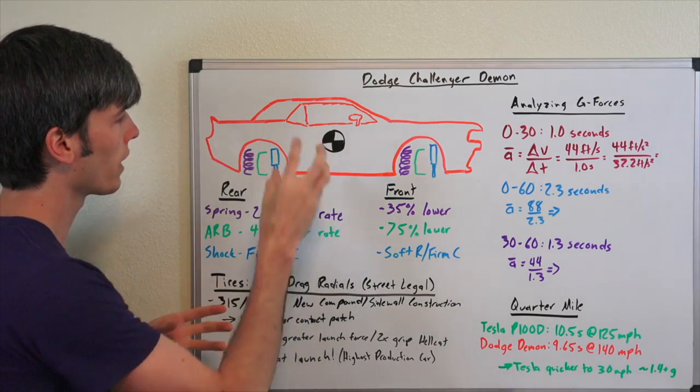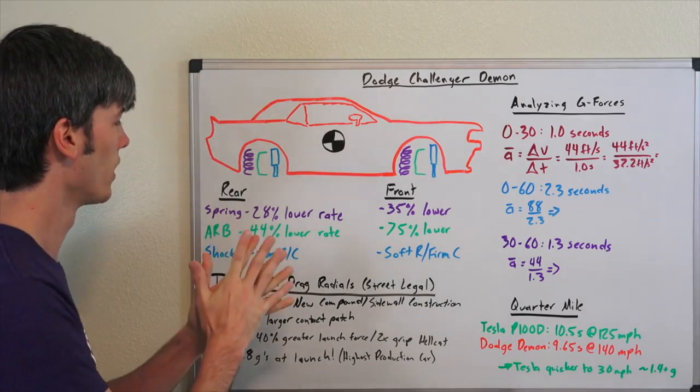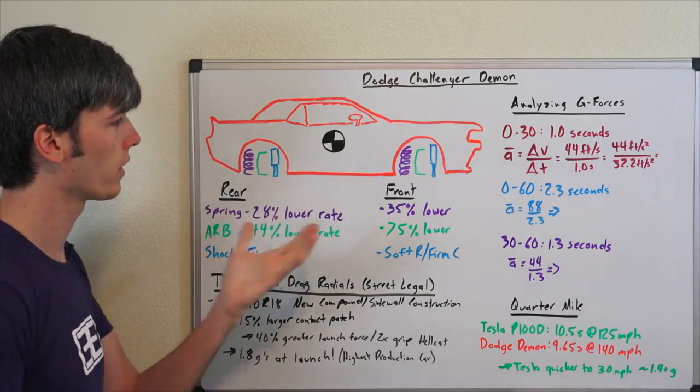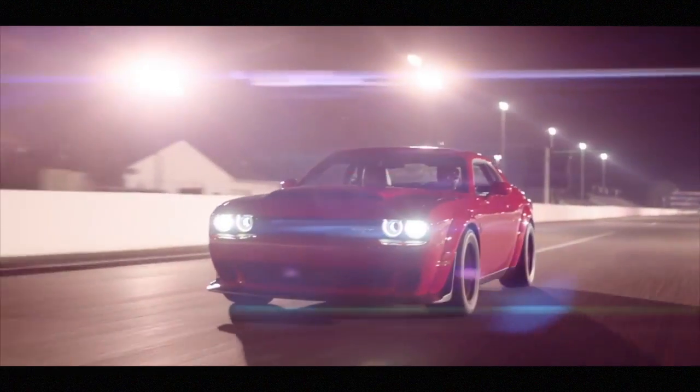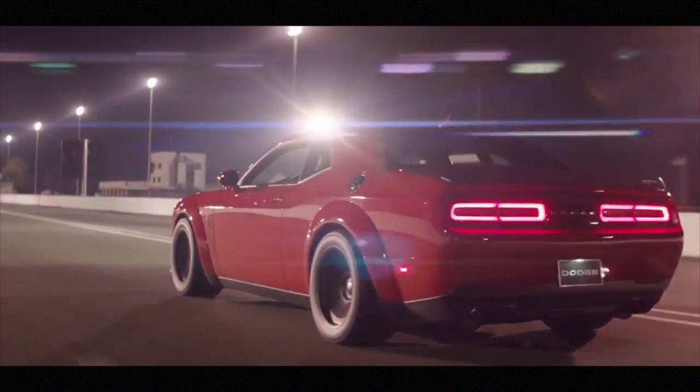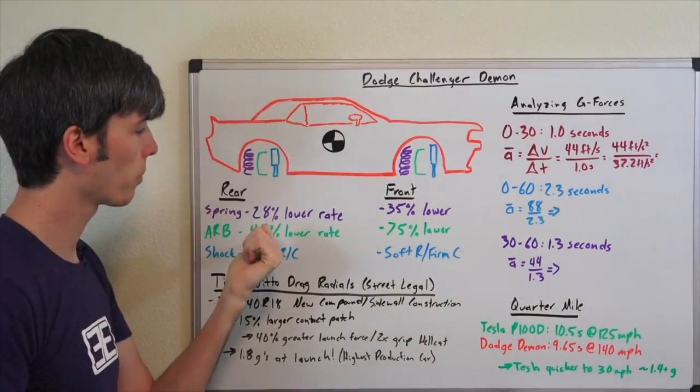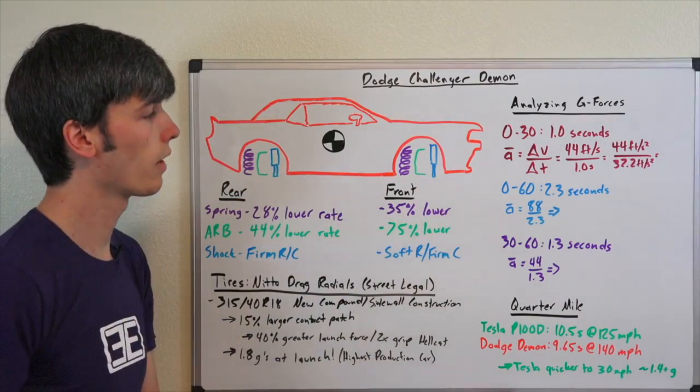How do they get the weight to all rest on that rear tire? Versus the Hellcat, they've lowered the spring rates in the rear by 28%, lower the spring rates in the front by 35%, the anti-roll bar down 44% in the rear, down 75% in the front.